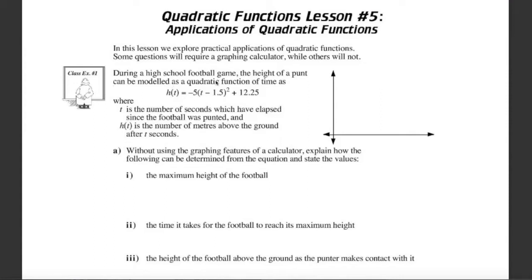During a high school football game, the height of a punt can be modeled as a quadratic function of time. H of t, the height at time t, is equal to negative five times bracket t minus 1.5, all brackets squared, plus 12.25. t is the number of seconds which have elapsed since the football was punted, and h is the number of meters above the ground after t seconds.